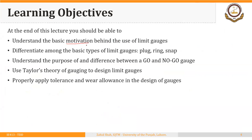You should be able to differentiate among the basic types of limit gauges: plug gauges, ring gauges, and snap gauges. You should be able to understand the purpose of and difference between a go gauge and a no-go gauge. The most important learning objective is to use Taylor's theory of gauging to design limit gauges, and finally to properly apply tolerance and wear allowance in the design of gauges.